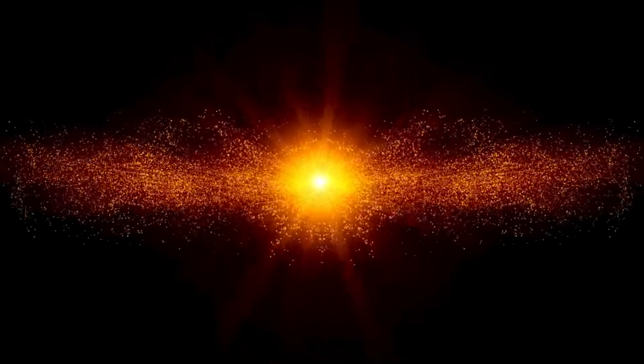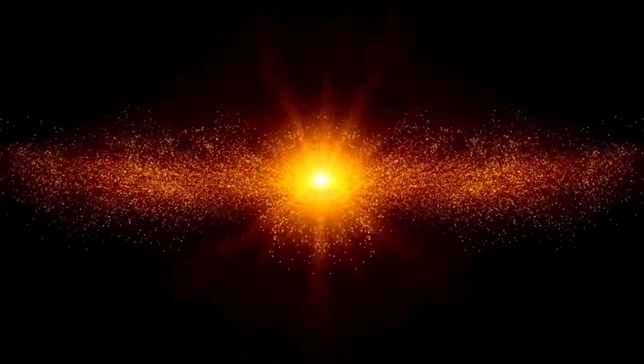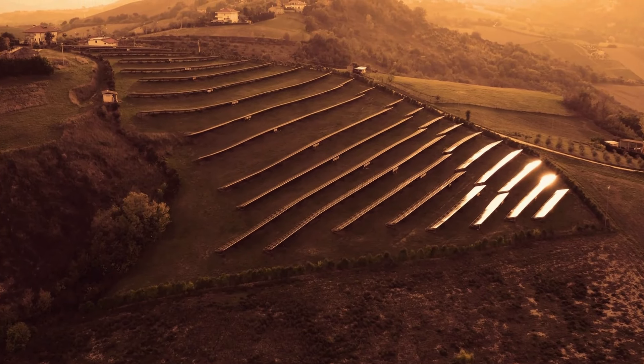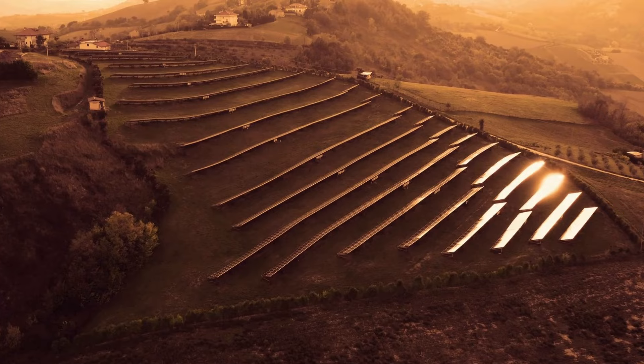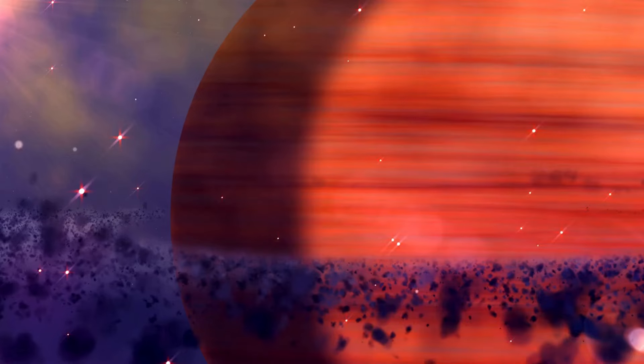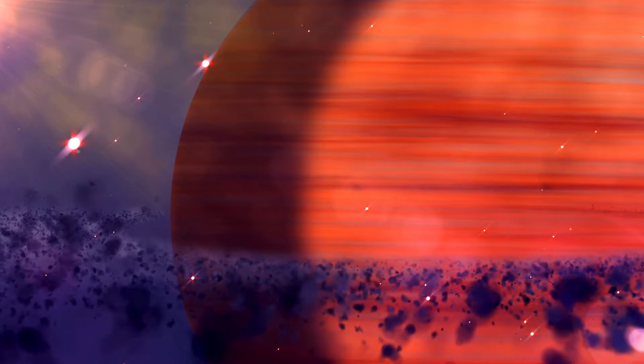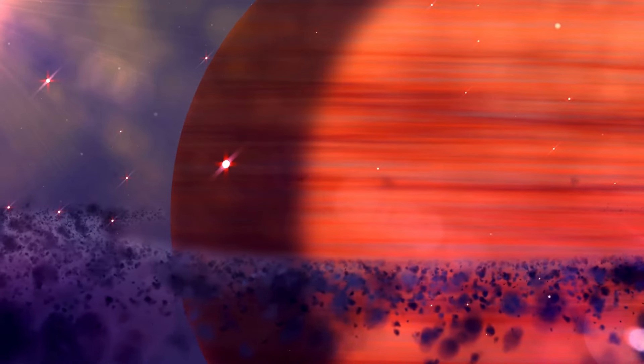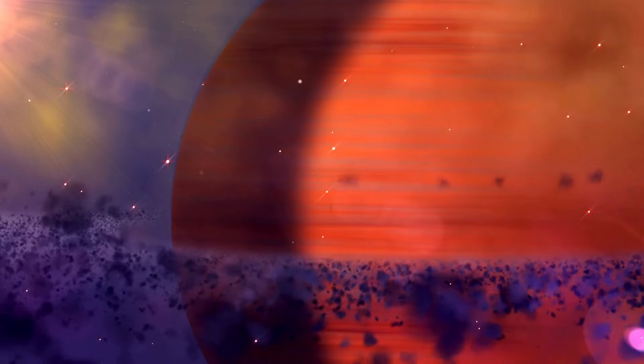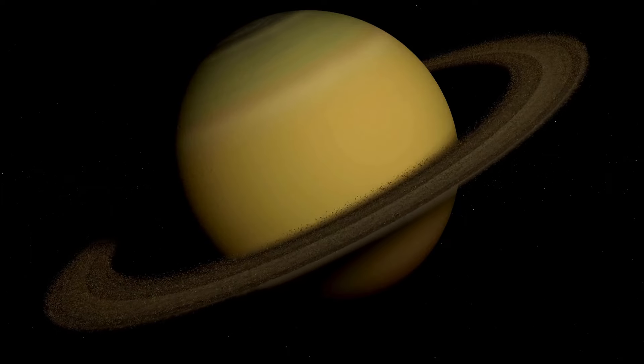The three-body problem in space is about figuring out how three objects in space, like Pluto, Neptune, and the Sun, move and affect each other with their gravity. It's like trying to predict where they will go based on where they start and how they pull on one another. In Pluto's case, this problem shows how its path, Neptune's path, and the Sun's gravity all work together in a complicated way.